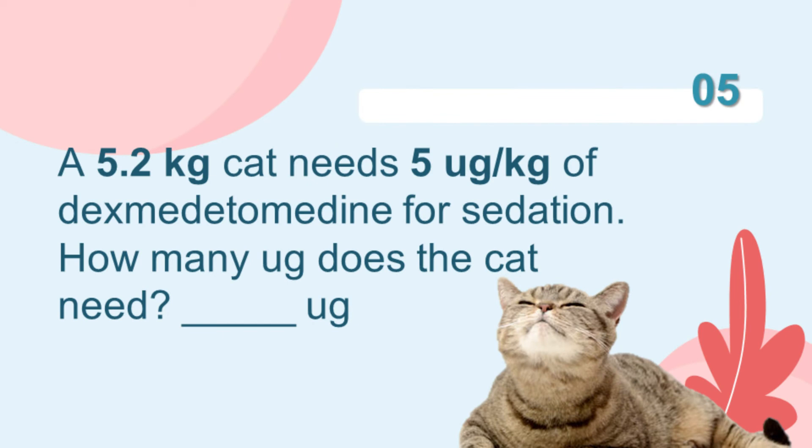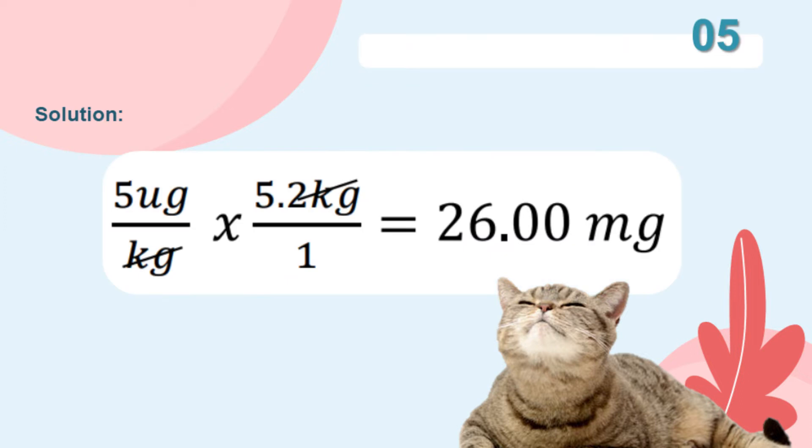For the last problem in Part 1: We have to calculate how many micrograms of dexmedetomidine at 5 micrograms per kilogram a 5.2-kilogram cat needs. For the calculation, we have 5 micrograms per kilogram of dexmedetomidine multiplied by 5.2 kilograms weight of the cat. The answer will be 26 micrograms.